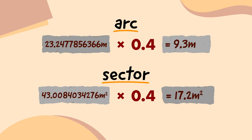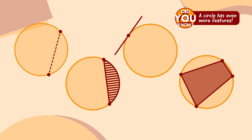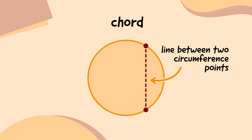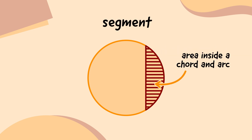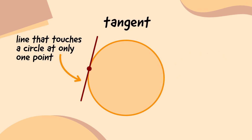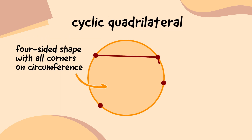You're a circle master now, Will. Did you know that a circle has even more features? A chord is a straight line that connects two points on the circumference. A segment is the area inside a chord and an arc. A tangent is a straight line that touches the circumference at only one point. And a cyclic quadrilateral is a four-sided shape with all four corners on the circle's circumference.